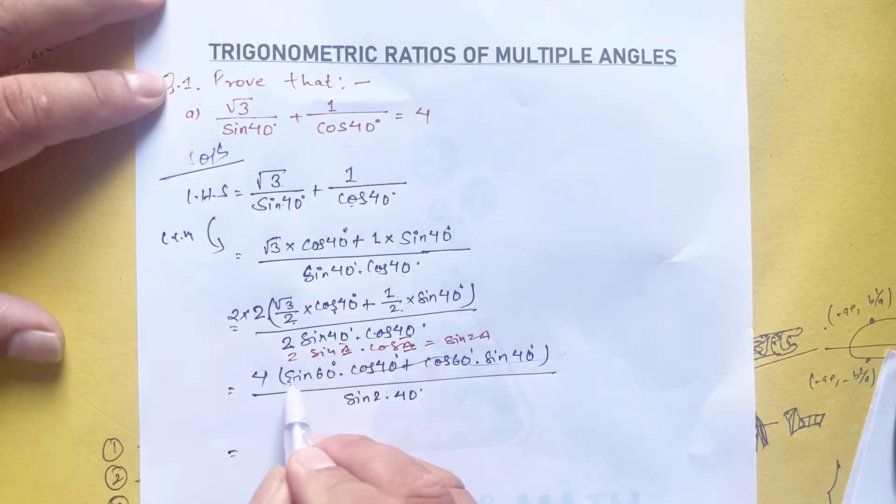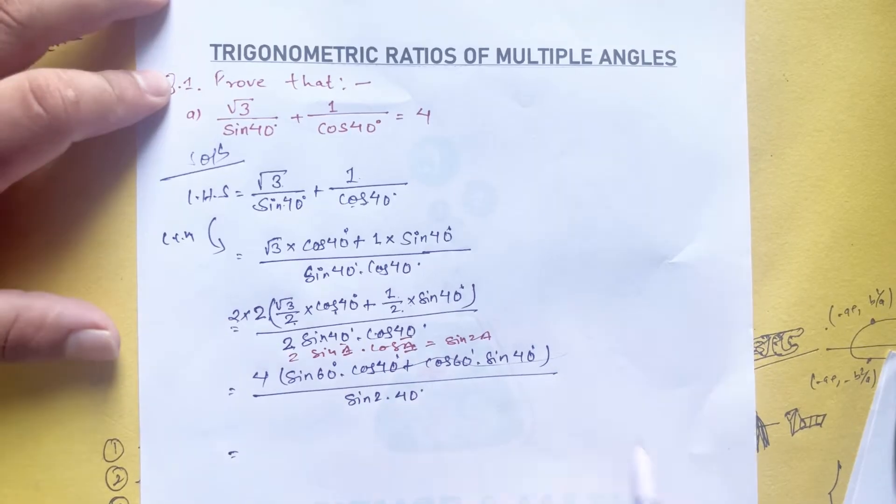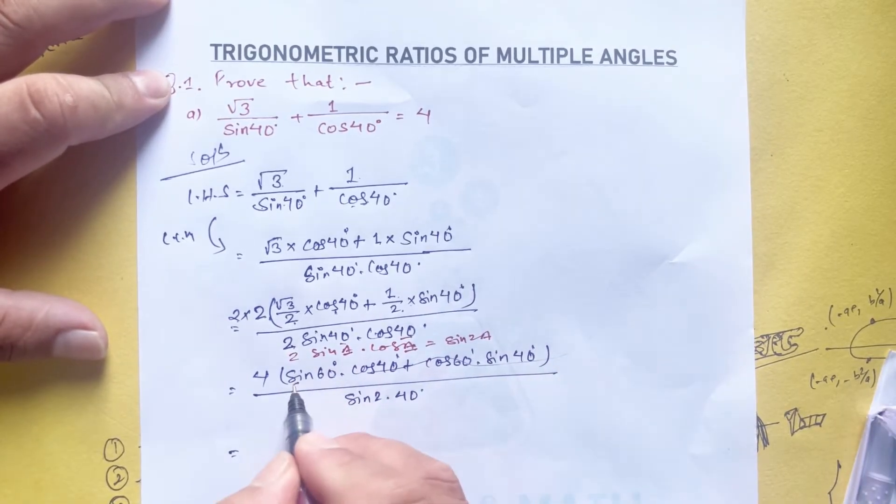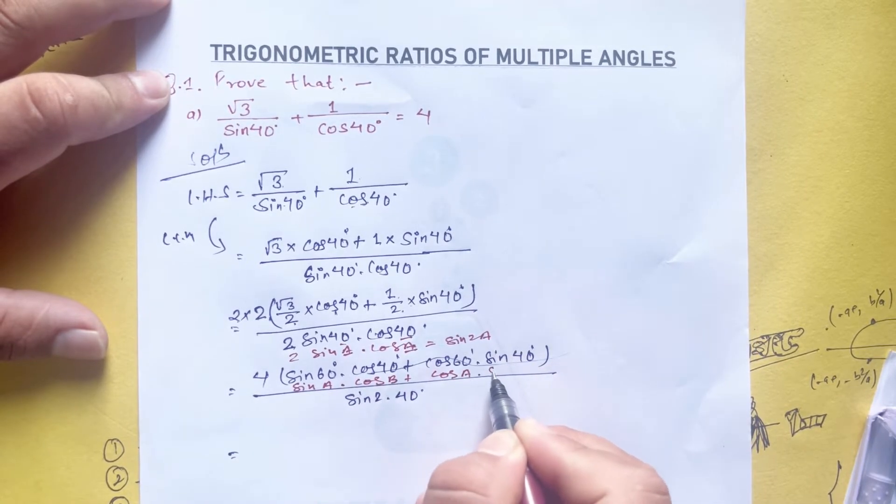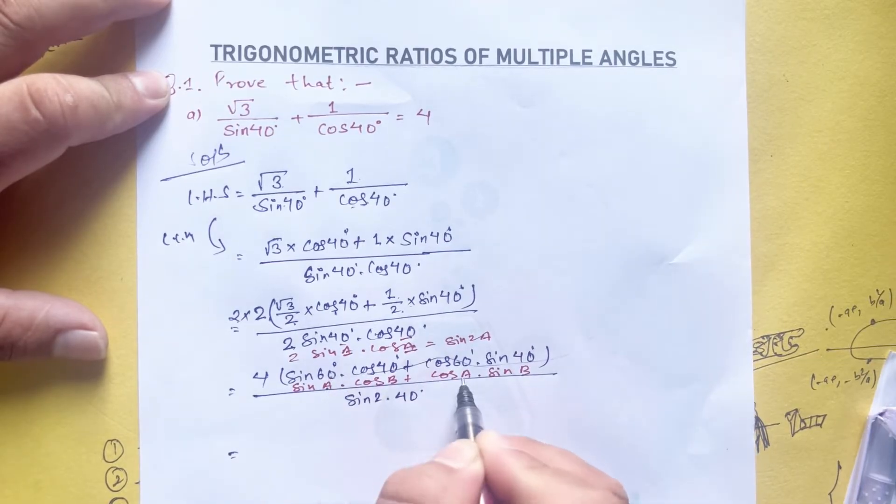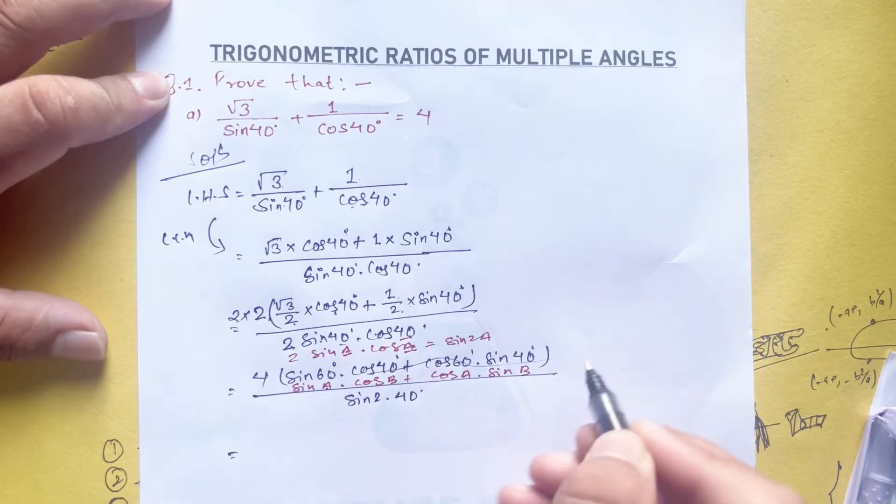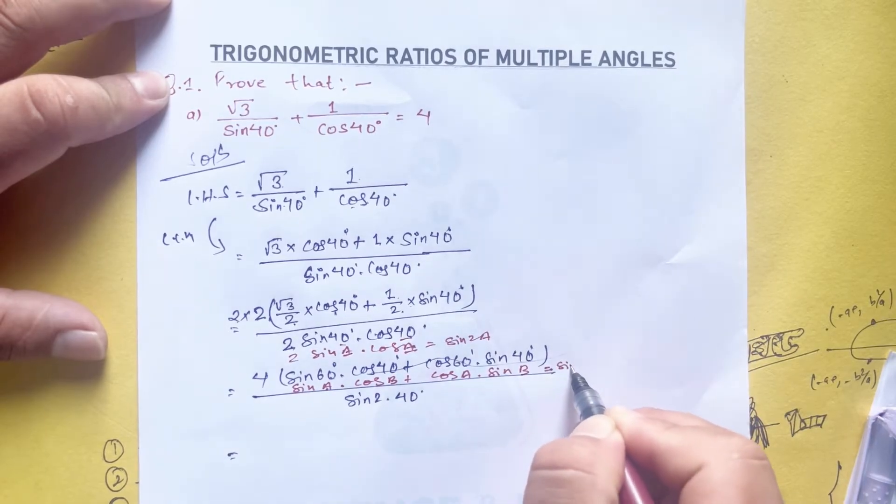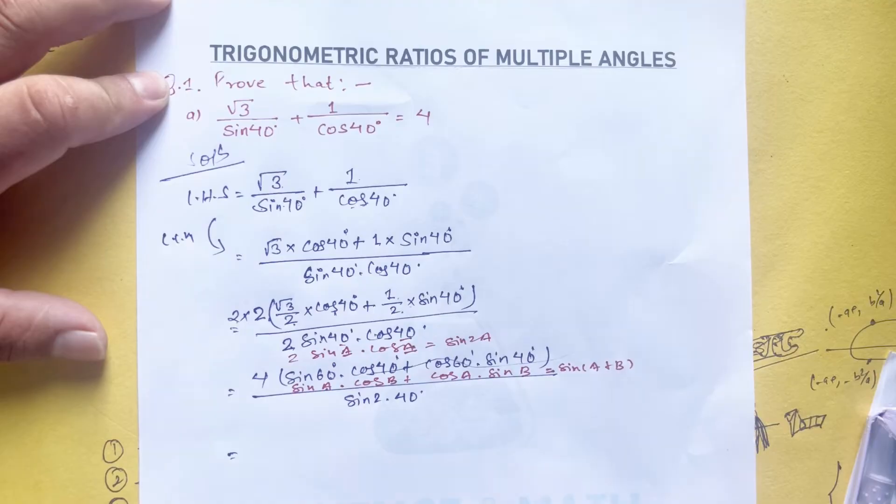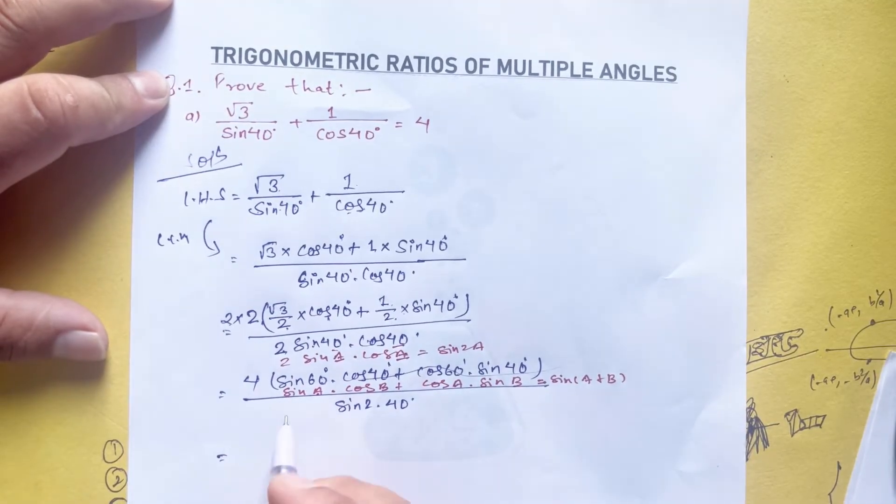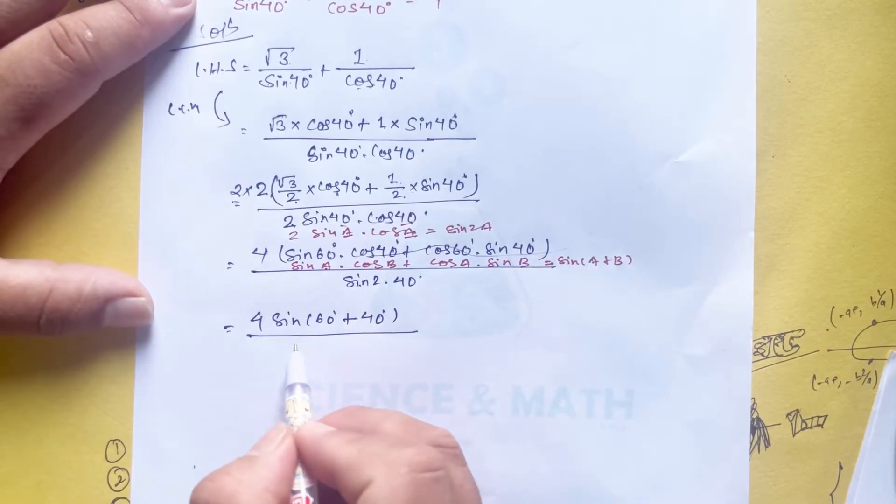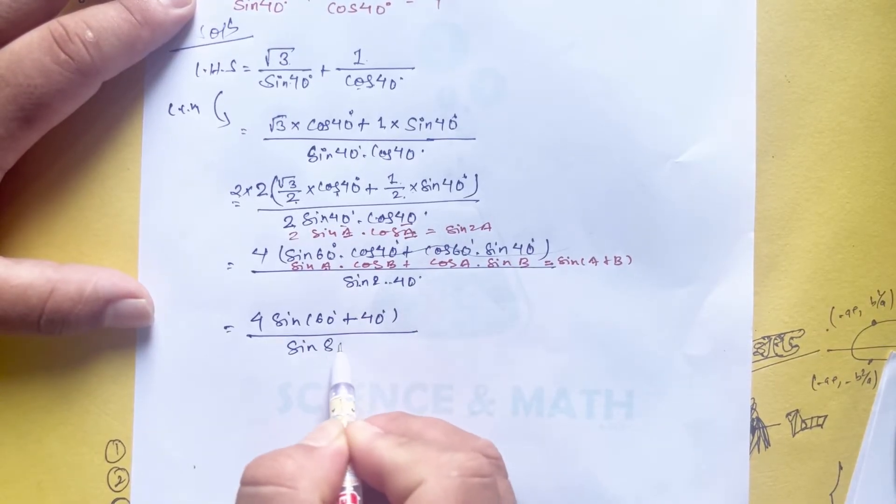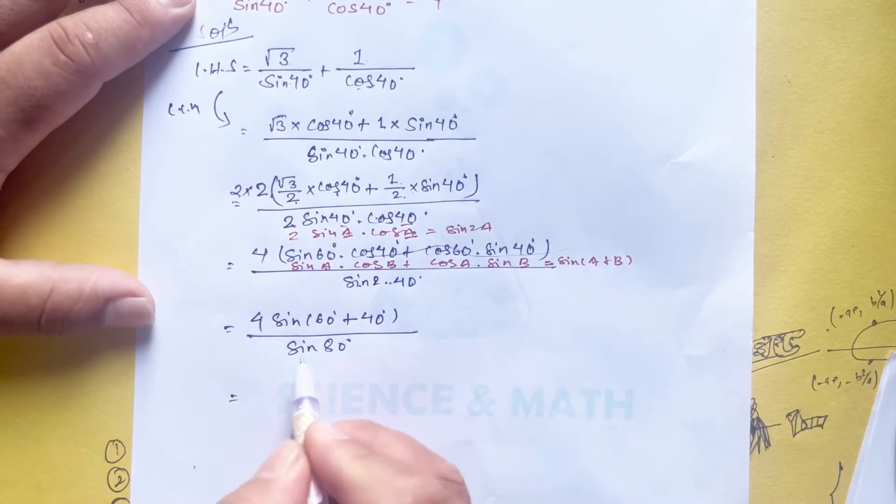Using the formula sin a cos b plus cos a sin b equals sin(a + b), where a equals 60 and b equals 40, we get sin(60 + 40) which equals sin 100 degree divided by...